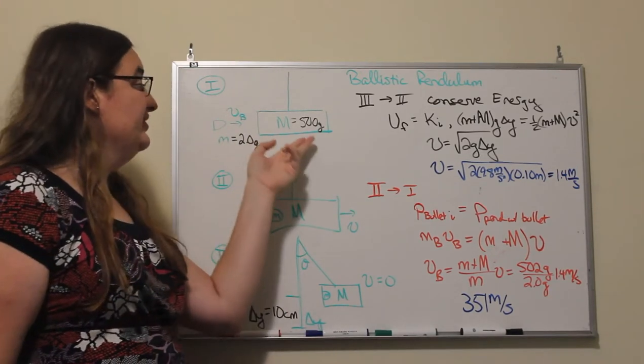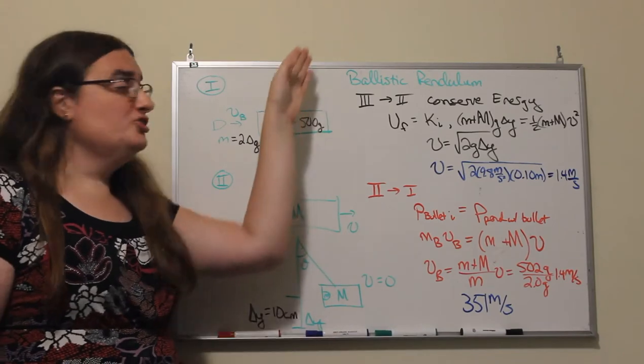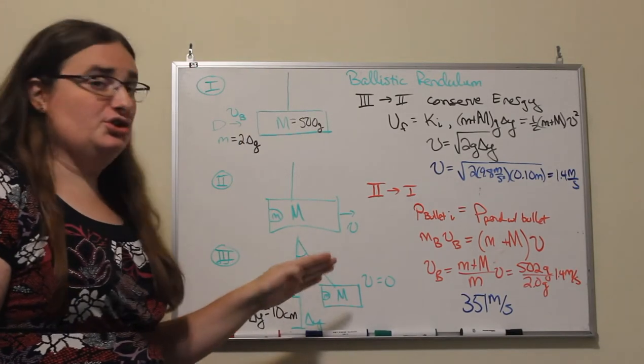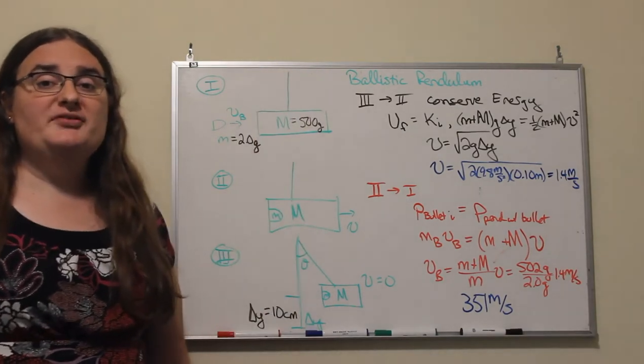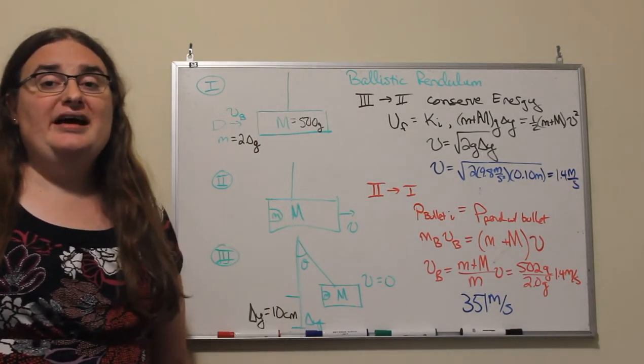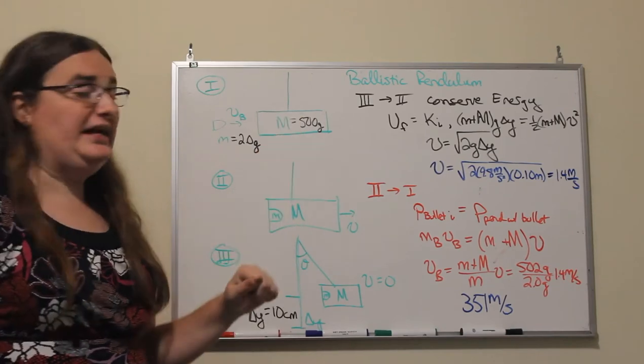Usually something like a large block of wood suspended on a long string or possibly on a pole with a pivot, and then some form of angle indicator that allows you to measure the deflection.